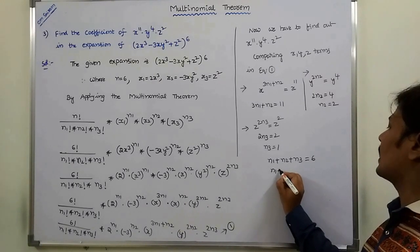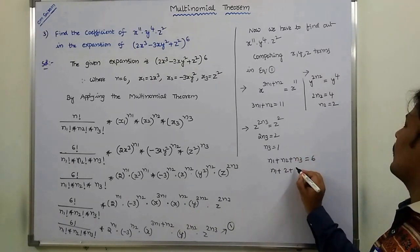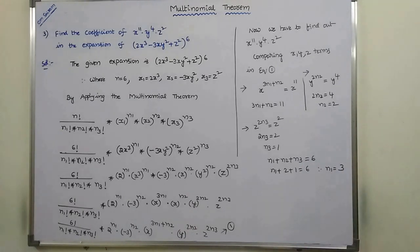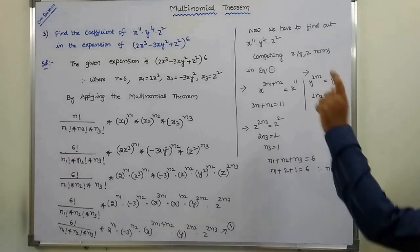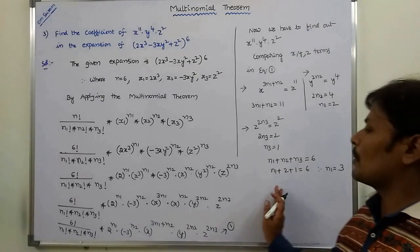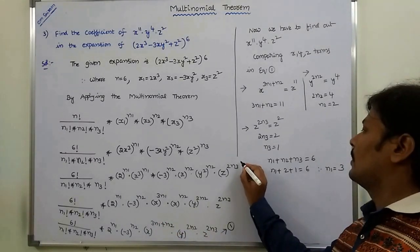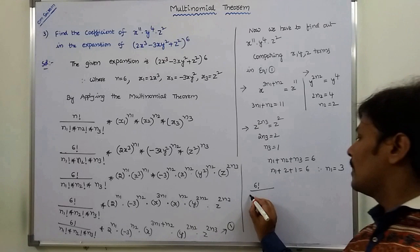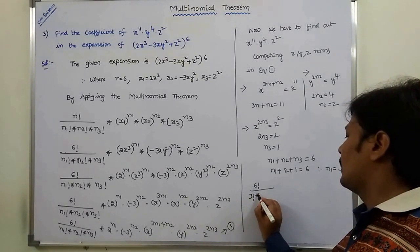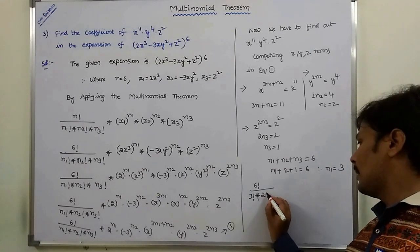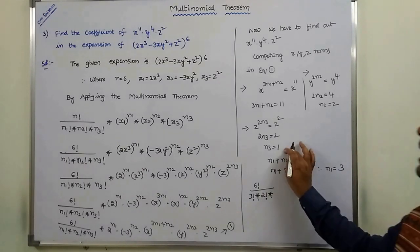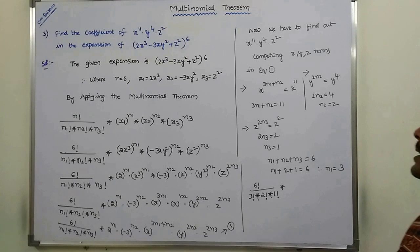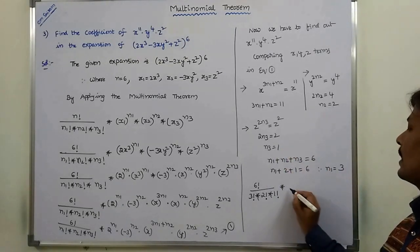With n2 equal to 2 and n3 equal to 1, we get n1 plus 2 plus 1 equals 6, therefore n1 equals 3. We can verify: n1 plus n2 plus n3 equals 3 plus 2 plus 1 equals 6, which matches n equal to 6.